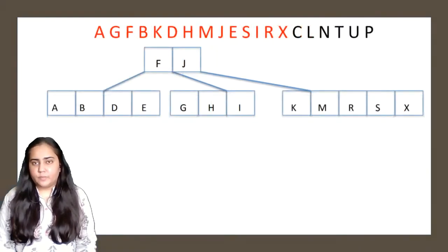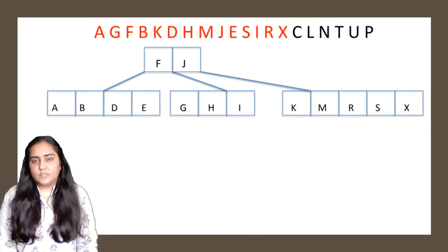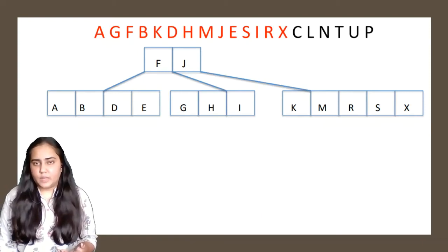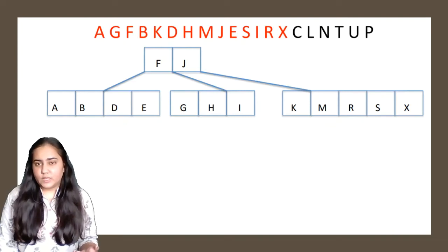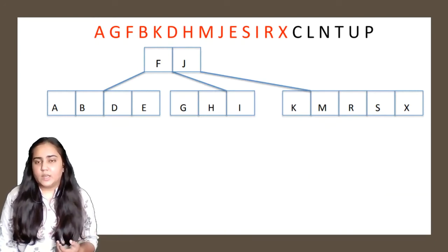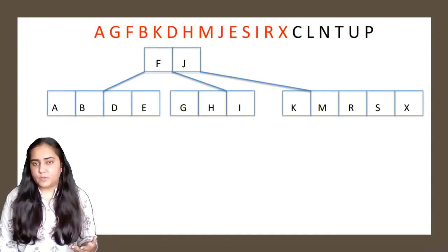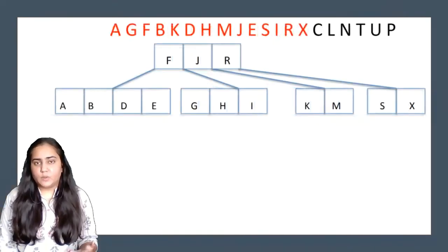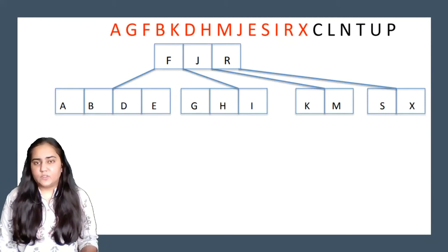Now we insert X. To insert X, go to the right side of J. Placing X next to S would make the node exceed four keys, so I have to take one key to the root. The key in the middle is R, so R goes to the top. Left of R has K and M; right of R has S and X. The rest of the tree takes care of itself.